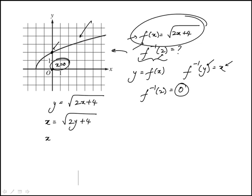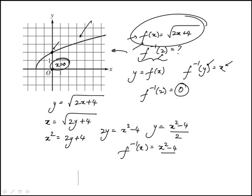Now I'm going to square both sides. x² = 2y + 4, 2y = x² - 4, or y = (x² - 4)/2. So our inverse function is (x² - 4)/2.